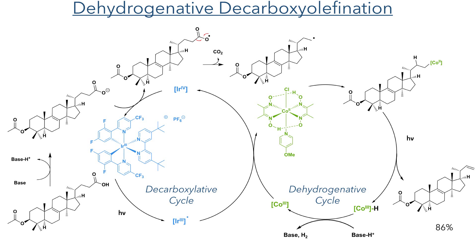The cobalt-hydride complex then reacts with a conjugate acid, forming hydrogen gas and regenerating the base, together with a cobalt(III) species. This cobalt(III) species can be reduced by the iridium(III) complex after it undergoes photoexcitation. This regenerates the cobalt(II) complex necessary to trap the primary radical, and also generates the iridium(IV) complex needed to generate the carboxyl radical.